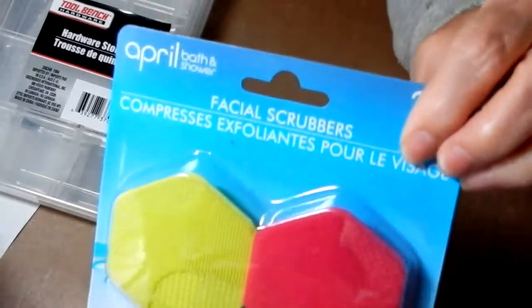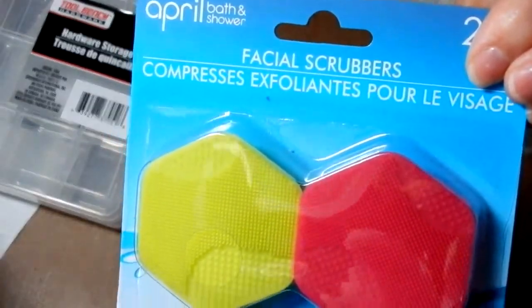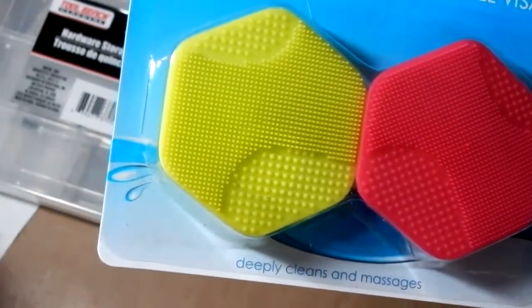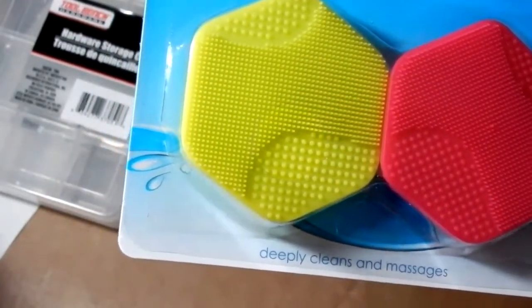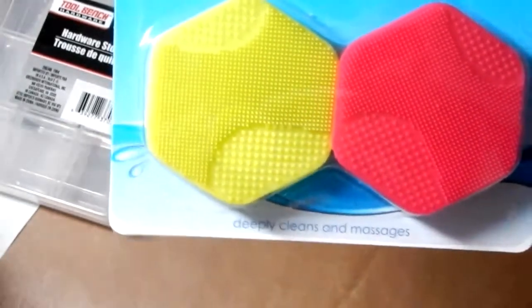So then I also found these, and these are facial scrubbers. And I don't know if you can see through the plastic, but there's different patterns there. And I thought these would be pretty cool as texture plates for polymer clay. So I picked one of those up.